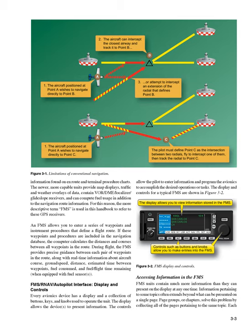Accessing information in the FMS: FMS units contain much more information than they can present on the display at any one time. Information pertaining to some topics often extends beyond what can be presented on a single page. Page groups, or chapters, solve this problem by collecting all of the pages pertaining to the same topic.